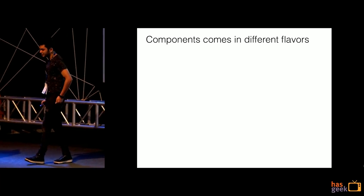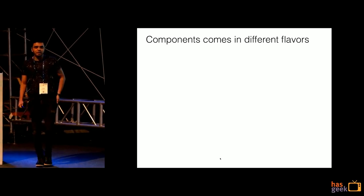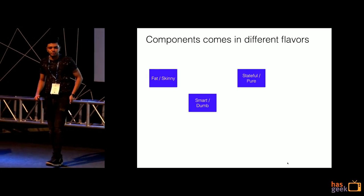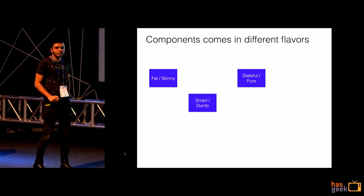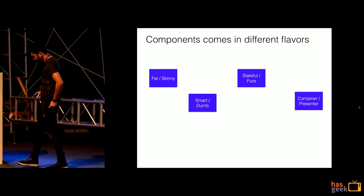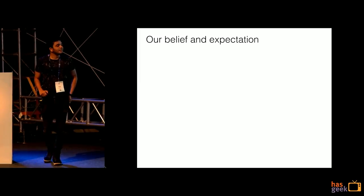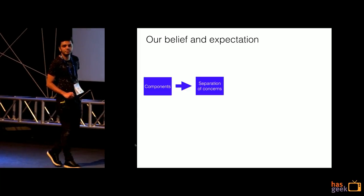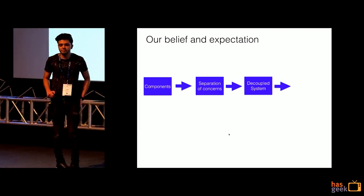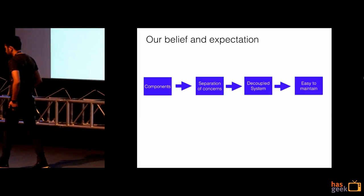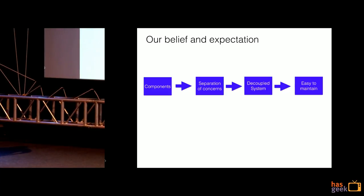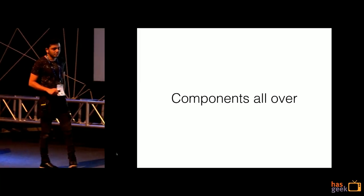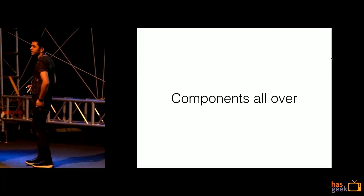In React we know everything is a component, and our components come in different flavors: fat or skinny components, smart or dumb components, stateful, pure components, container or presenter components. Our belief and expectation with these components is that components mean separation of concerns, separation of concerns means a decoupled system, and that leads to an easily maintainable system. So we start creating components all over, and all our applications are bundled with different components.